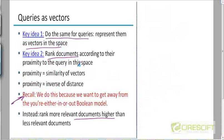Now we can think of the query itself as a short document. We can map the query into that V-dimensional space, and then we are going to look at the distance between the query and all the documents in that space. The closest document to the query is going to be the one that will have the highest score.